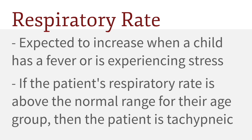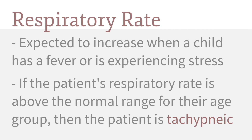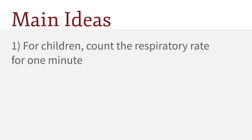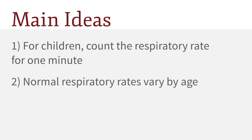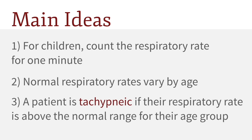Also, the respiratory rate is expected to increase when a child has a fever or is experiencing stress. If the patient's respiratory rate is above the normal range for their age group, then the patient is tachypneic. So here are the main takeaways: for children, be sure to count the respiratory rate for 1 minute. Normal respiratory rates vary by age. And finally, a patient is tachypneic if their respiratory rate is above the normal range for their age group.